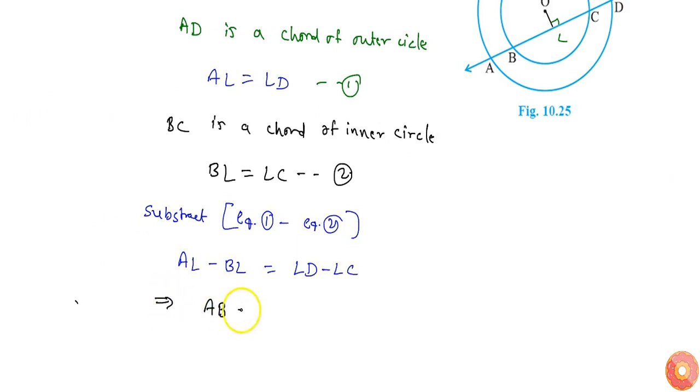Similarly, if I subtract LC from LD, I will get CD. So AB will be equal to CD.